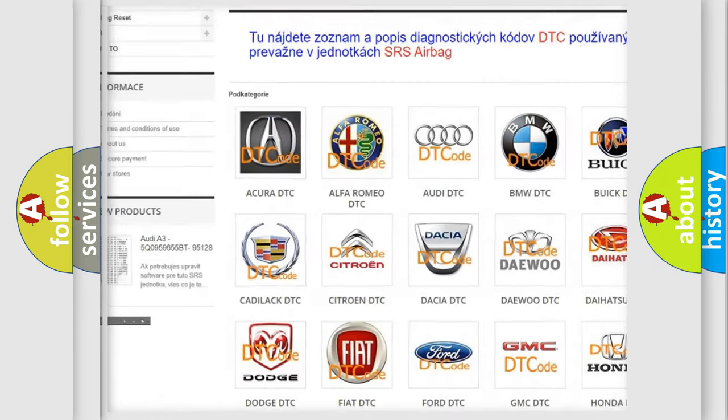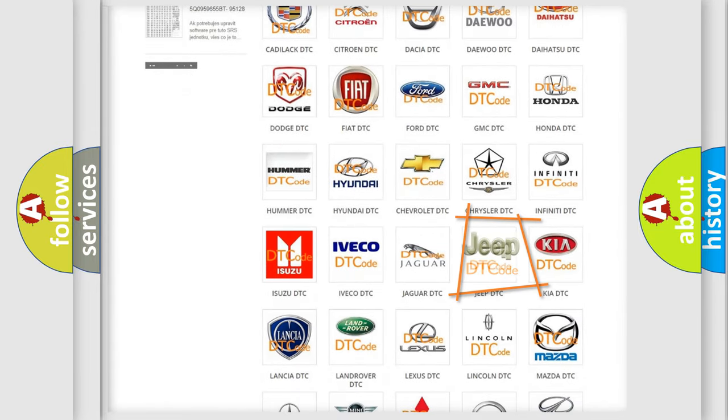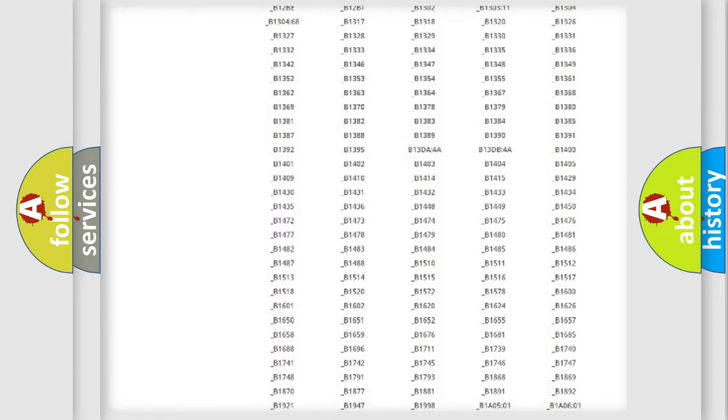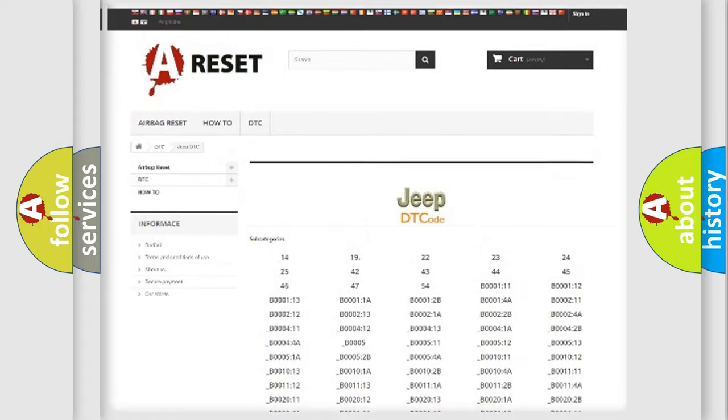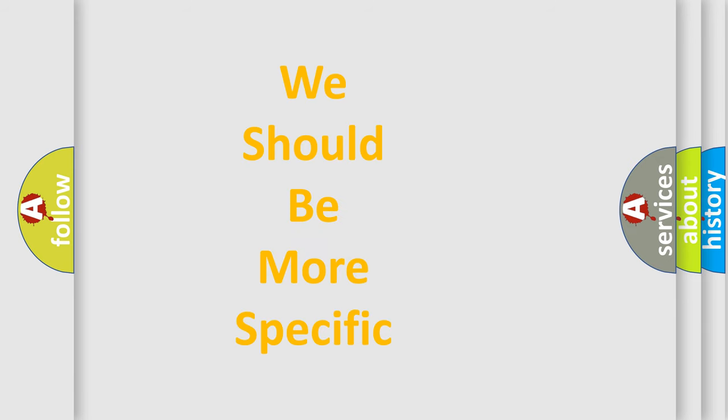Our website airbagreset.sk produces useful videos for you. You do not have to go through the OBD2 protocol anymore to know how to troubleshoot any car breakdown. You will find all the diagnostic codes that can be diagnosed in Jeep vehicles, also many other useful things.